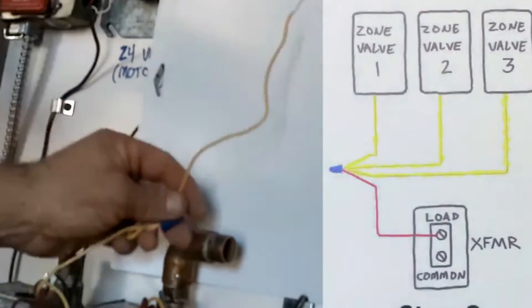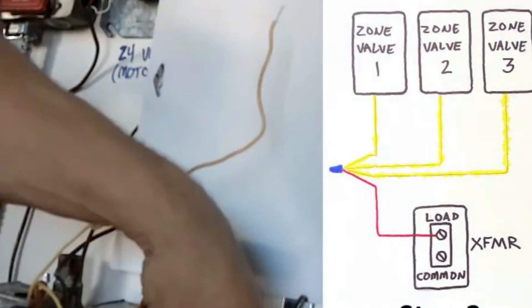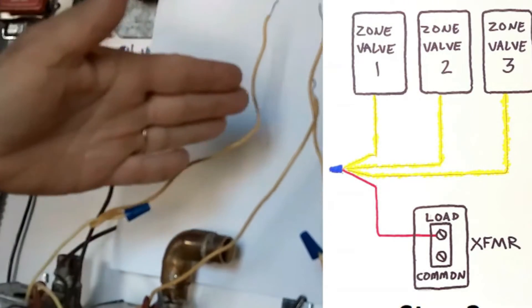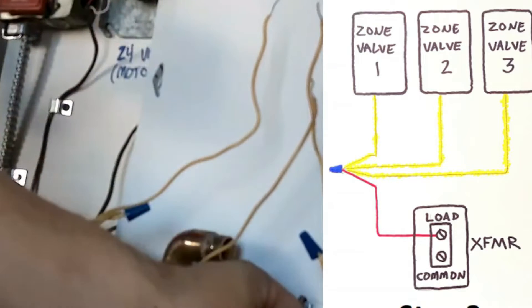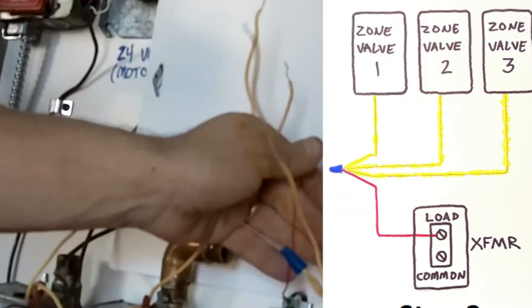Step three, you just take one yellow wire from each zone valve and you will wire all those together with the load wire coming off your external transformer.